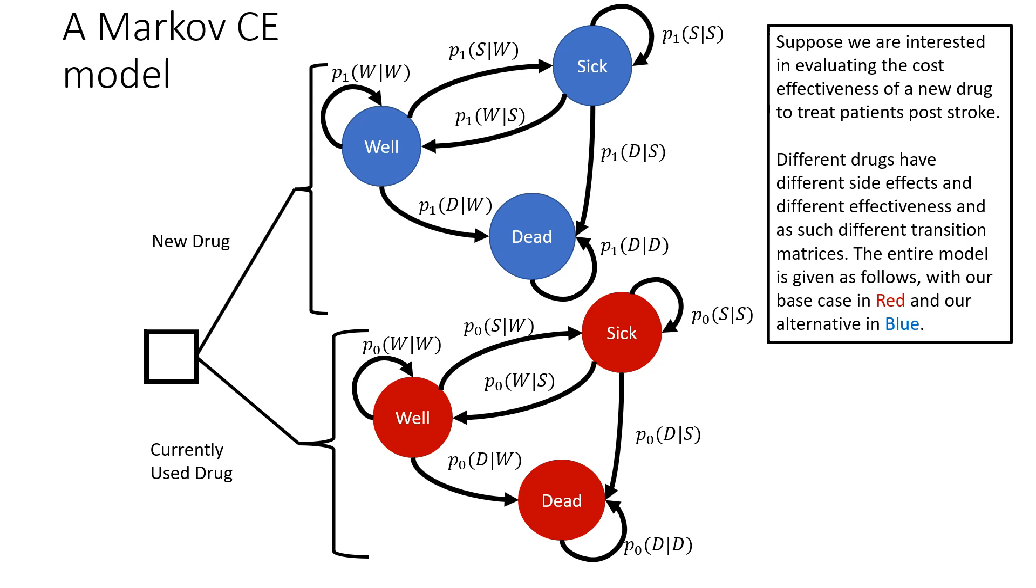A Markov model looks like this one here, where we start at a decision node and either move into one process or another. In this case, we're interested in evaluating the cost-effectiveness of a new drug for patients post-stroke. Different drugs have different side effects and different effectiveness at different states. As such, we're going to have completely different transition models associated with them. However, the structure of each is going to be the same, though this isn't always true.